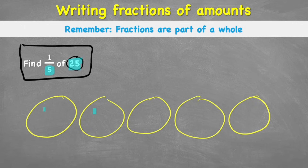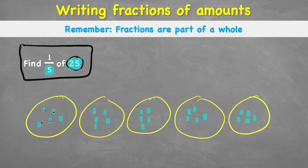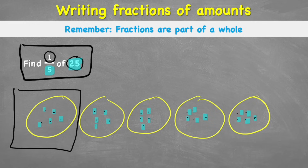Then I'm simply going to share my 25 marbles evenly between these 5 sharing circles, placing 1 through 25 one by one. Let's quickly check that they all have the same amount — I count 5 in each of the five circles. Good. So we know each one has 5. Therefore, when I'm finding out how many is in 1 fifth of these amounts, I can just focus on one circle and see that I have an answer of 5.